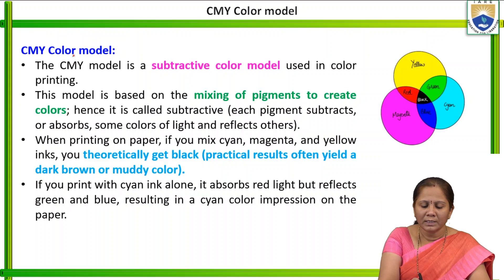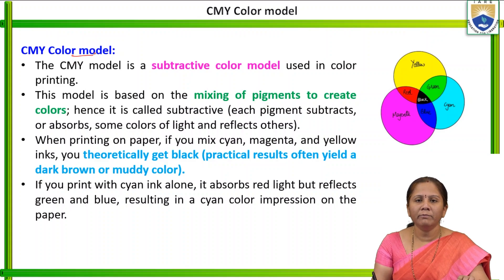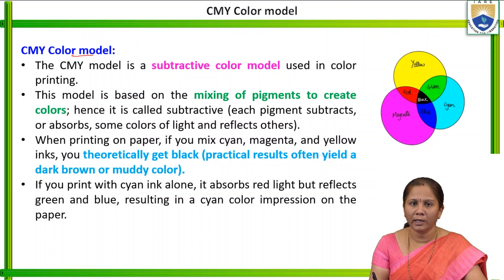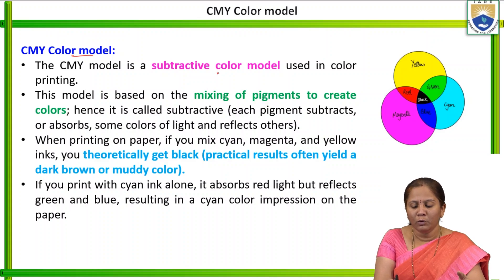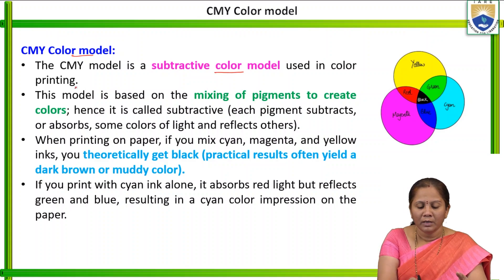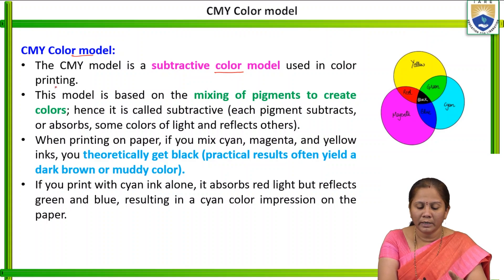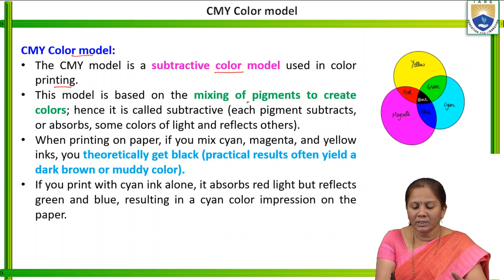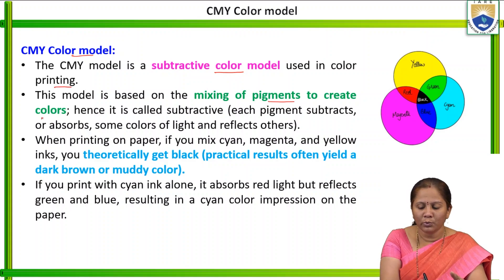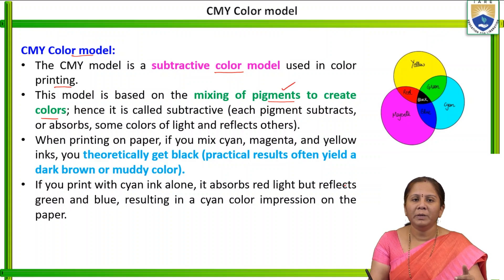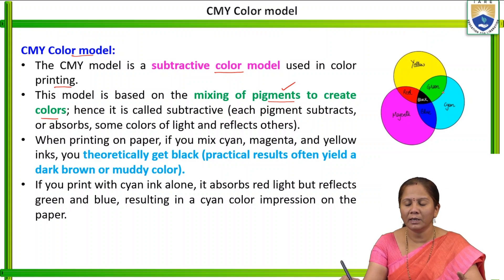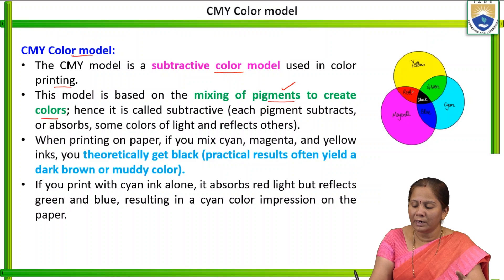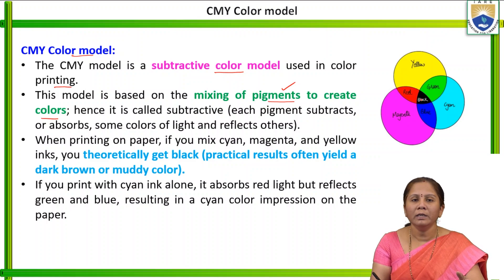The next color model is the CMY color model. CMY represents cyan, magenta, and yellow — the secondary colors. They are combined using the subtractive color model. This model is used in printing applications and is based on mixing pigments — secondary colors — to create colors like red, green, blue, and black.